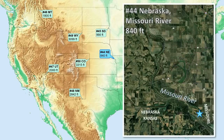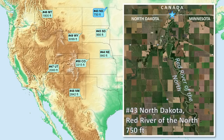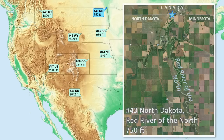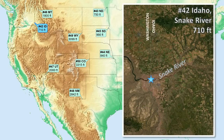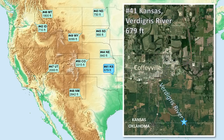Number 44 is Nebraska, on the Missouri River. Number 43 is North Dakota, on the Red River of the North. Number 42 is Idaho, on the Snake River. Number 41 is Kansas, on the Verdigris River.